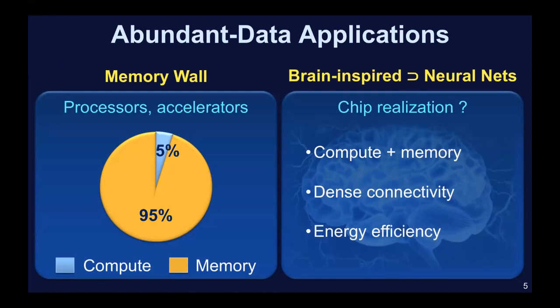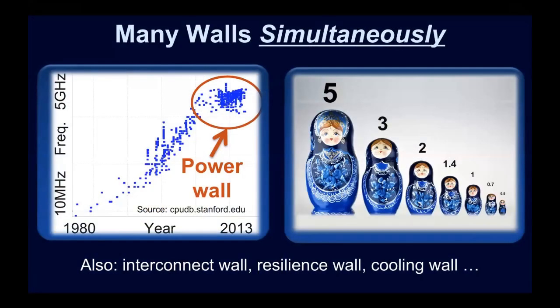The memory wall is there irrespective of the computational model you're using — neural nets, brain-inspired computing models, all face the same challenges around compute, memory, connectivity, and energy efficiency. And the memory wall is not the only wall we have to worry about. There are many other walls simultaneously. Two of the most prominent are the power wall — since Dennard scaling has stopped for more than a decade now — and the miniaturization wall. Today we are at a five or three nanometer technology node, and the question is how far we will go.